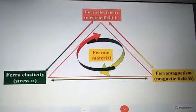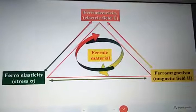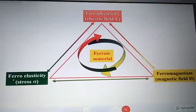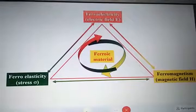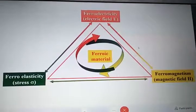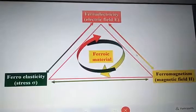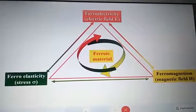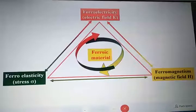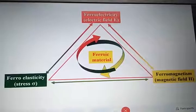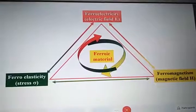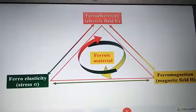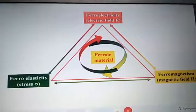Ferroic materials are materials which have ferroelectricity, ferromagnetism, or ferroelasticity. If more than one of these is present, then it is known as multiferroic materials, where you can control ferroelectricity by the magnetic field or vice versa. In the same fashion, you can control ferroelasticity, which is caused by stress, by applying a magnetic field.